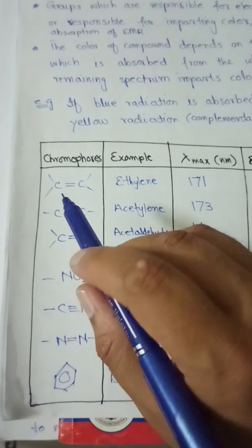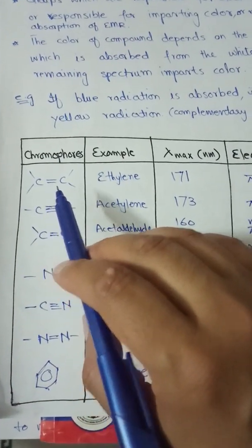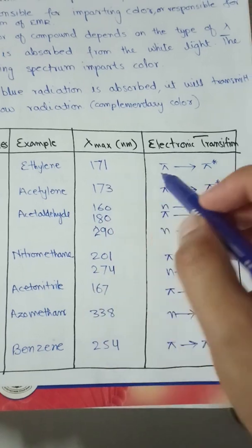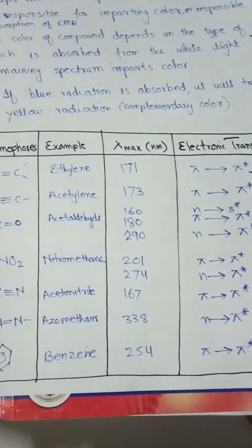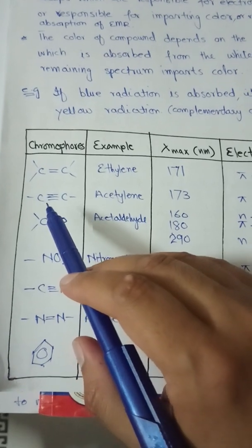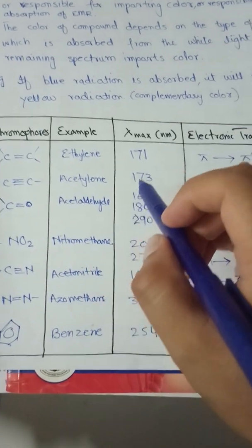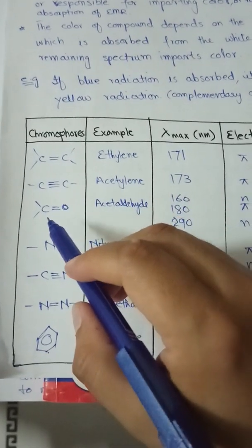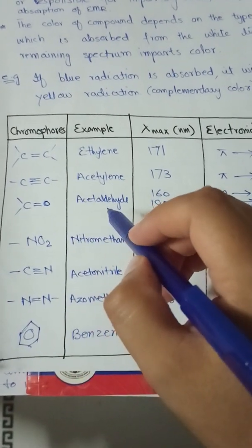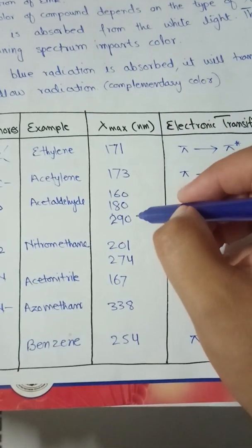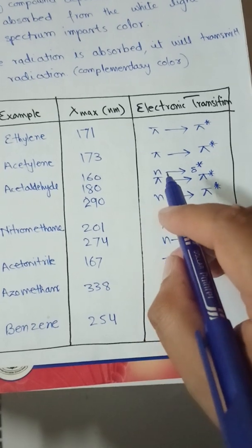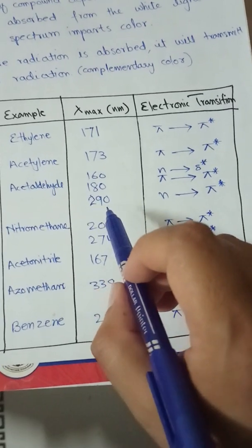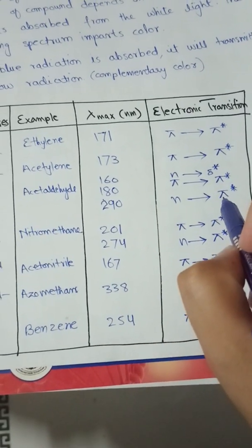Different chromophores include: alkenes (double bond) — example is ethylene, lambda max 171 nm, electronic transition pi to pi star. Acetylenic bond (triple bond) — example is acetylene, lambda max 173 nm, transition pi to pi star. Carbonyl group — example is acetaldehyde, which has lambda max at 160 nm due to n to sigma star transition, 180 nm from pi to pi star, and 290 nm which is n to pi star.